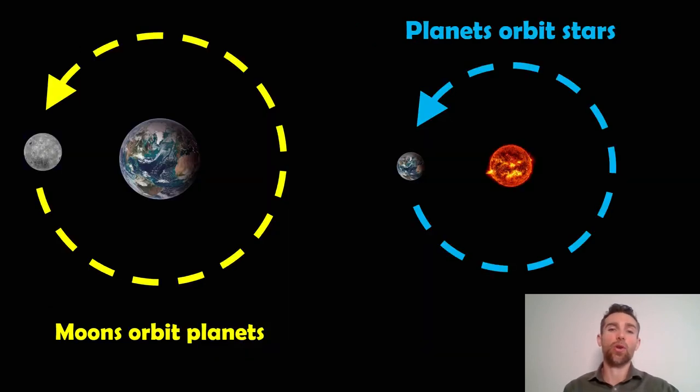Before we have a look at what obliquity is, let's first revisit orbits in general. Moons orbit planets and planets orbit stars. There are a few gray areas, you can have planets that don't orbit stars, but generally a planet will orbit around a star and a moon will go around the planet.